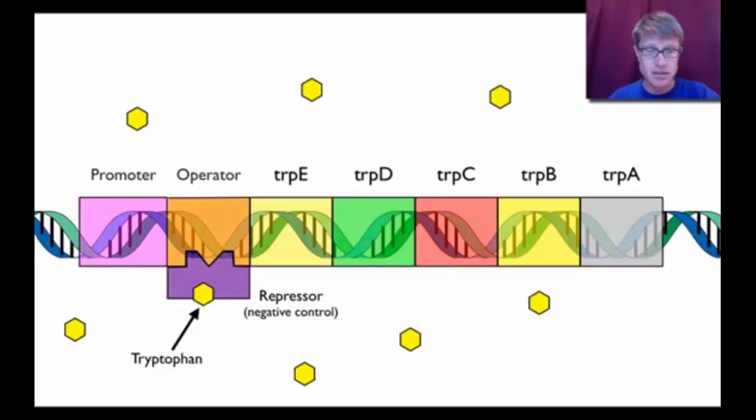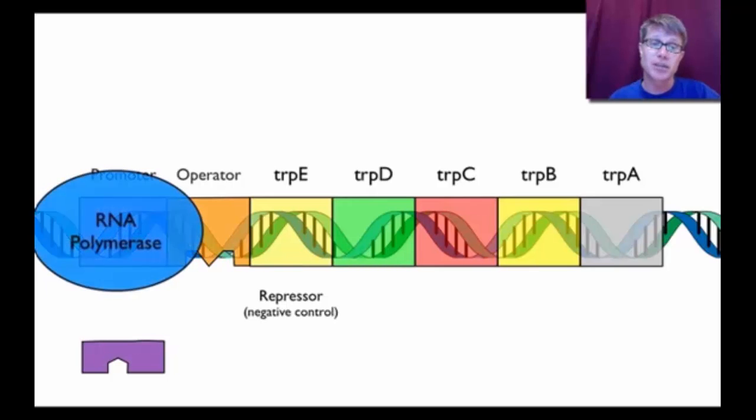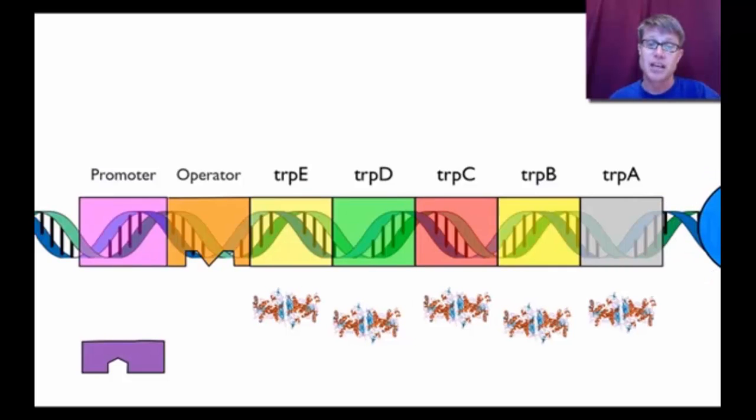The way it works here is that the actual tryptophan fits in the repressor. It gives it a shape that actually blocks the RNA polymerase or the making of those proteins. But let's say for example that your diet doesn't have tryptophan so you're not getting tryptophan in your diet. What does the bacteria do? Well now the repressor is going to change shape. It's going to change shape that allows RNA polymerase on. RNA polymerase is going to quickly make those five proteins and then those five proteins are going to make more tryptophan.